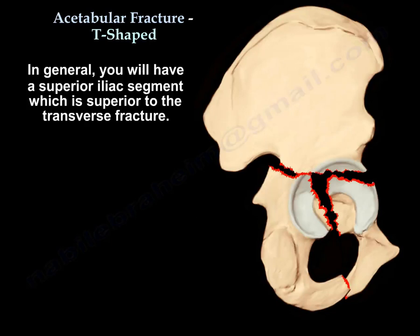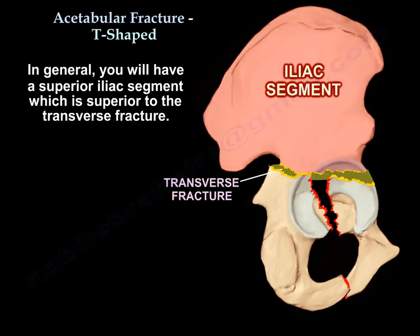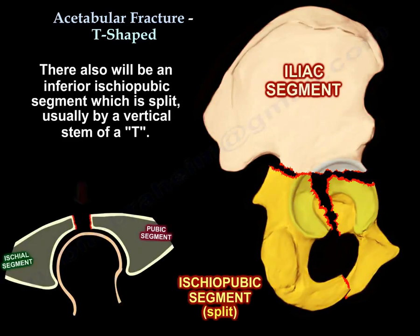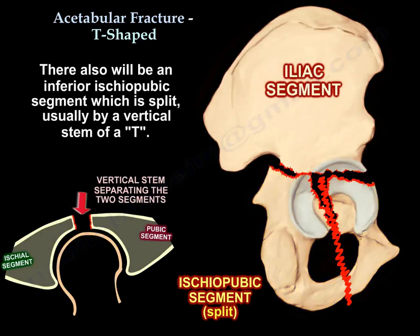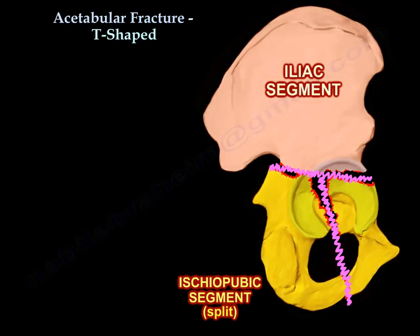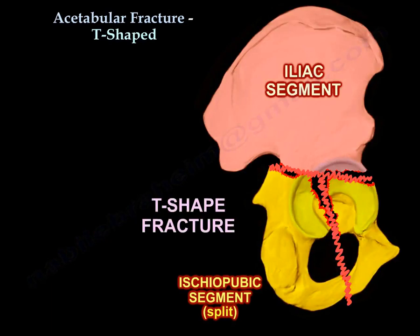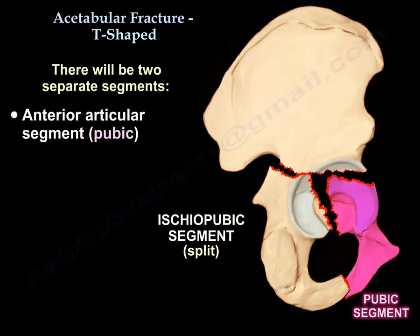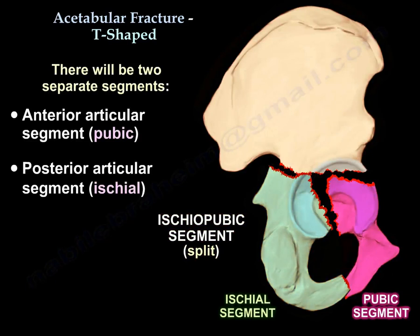In general, you are going to have a superior iliac segment which is superior to the transverse fracture, and then you will have an inferior ischiopubic segment. This inferior ischiopubic segment is split by the vertical stem of the T. You will have two separate segments: the anterior articular segment (the pubic segment) and the posterior articular segment (the ischial segment).